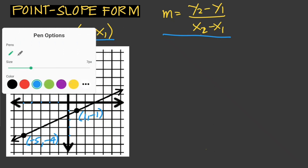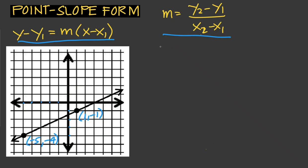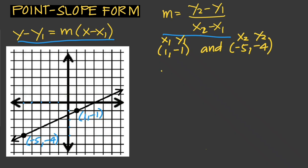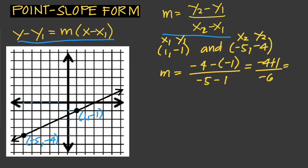Given the two points on the graph — (1, -1) and (-5, -4) — we can use these two points to find the slope. Assigning x₁, y₁, x₂, y₂, and solving: (y₂ - y₁) / (x₂ - x₁) = (-4 + 1) / (-5 - 1) = -3 / -6, so the slope m = 1/2.